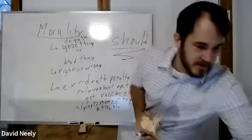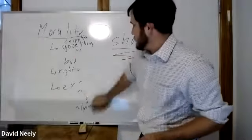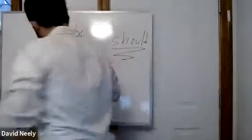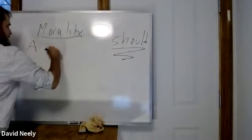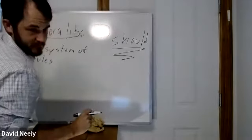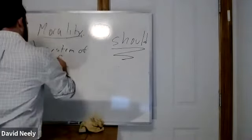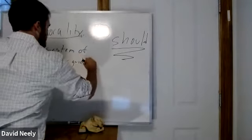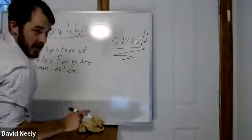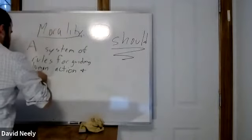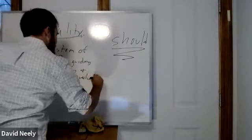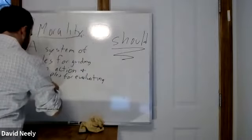So the way the book defines morality is: a system of rules for guiding human action and principles for evaluating those rules.